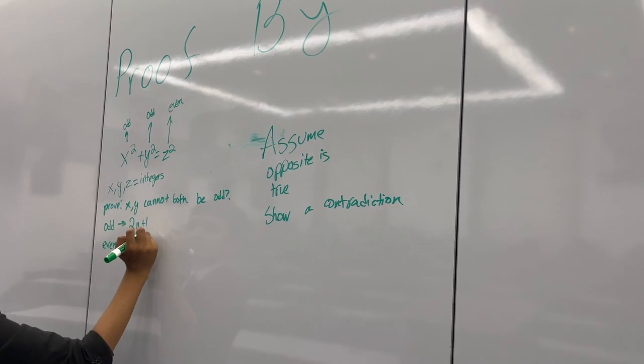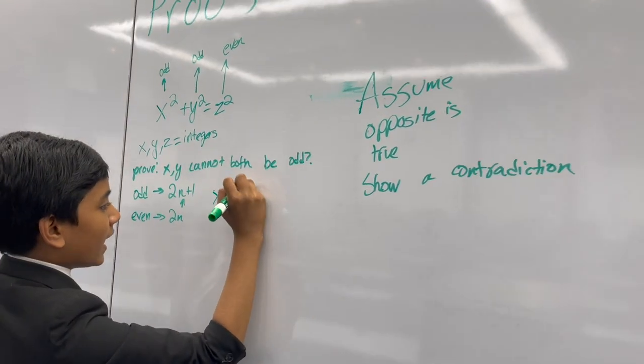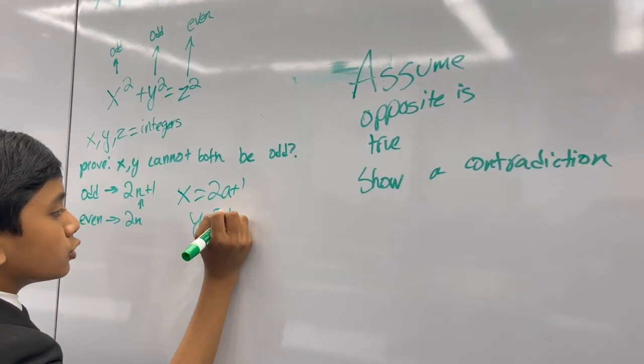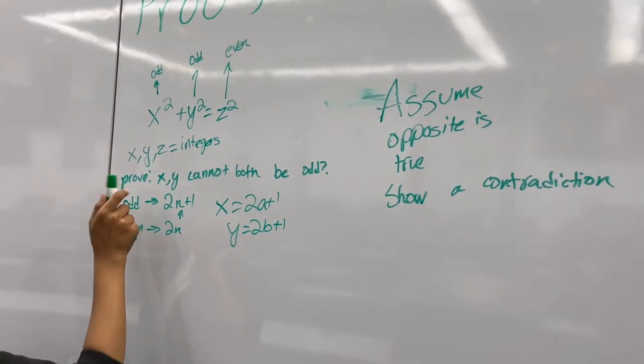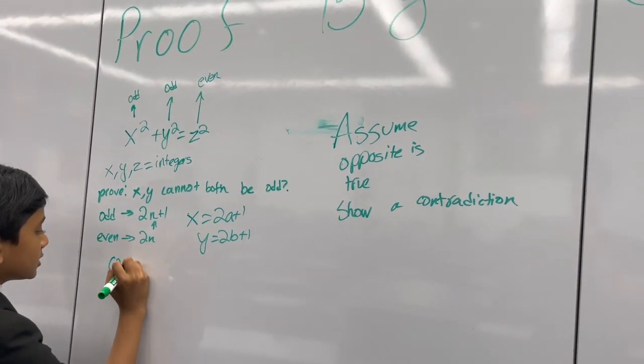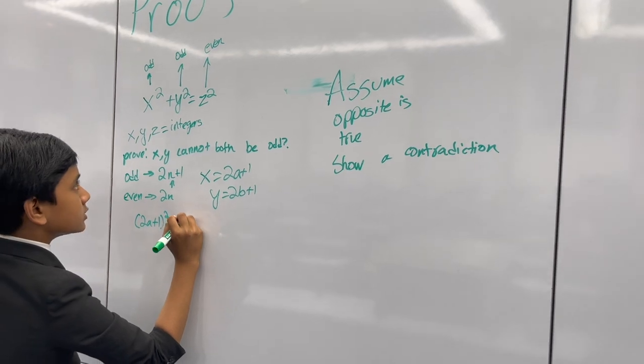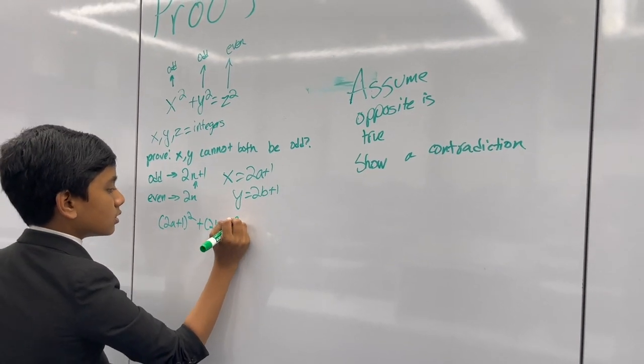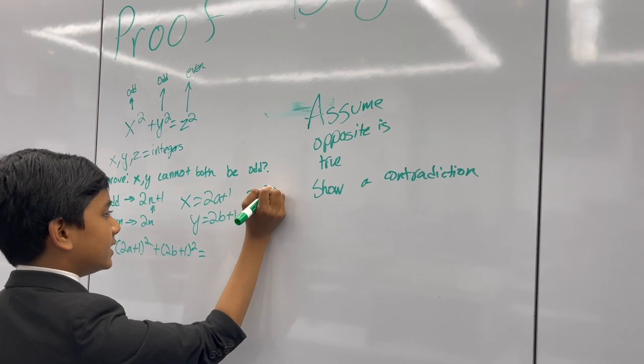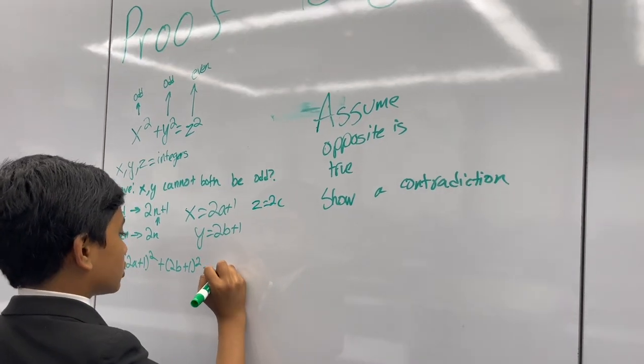Let's write x as 2a plus 1 and y as 2b plus 1. So 2a plus 1 squared plus 2b plus 1 squared equals, we can express z as 2c, and a, b, and c are all integers here.